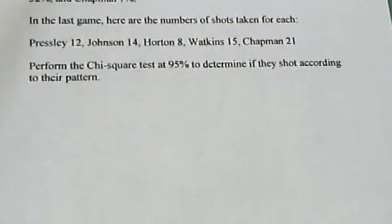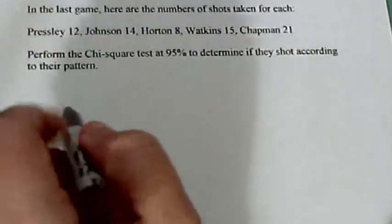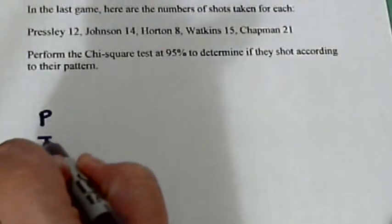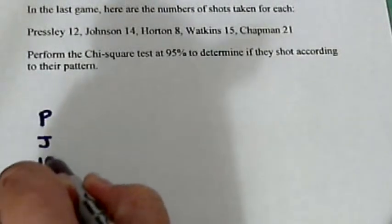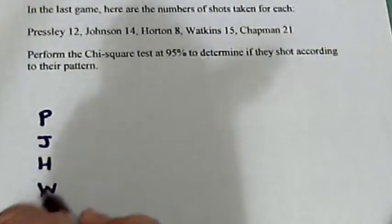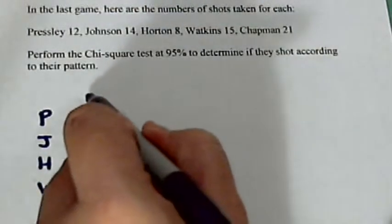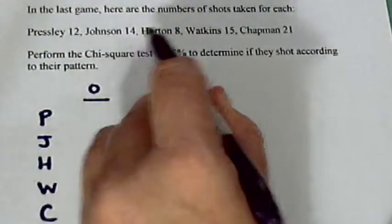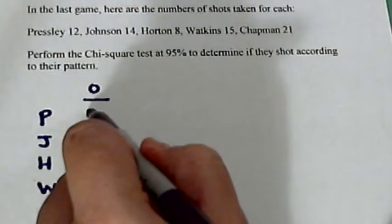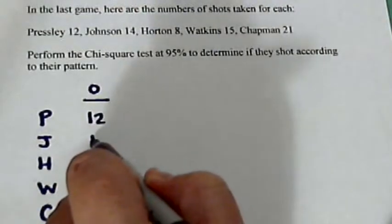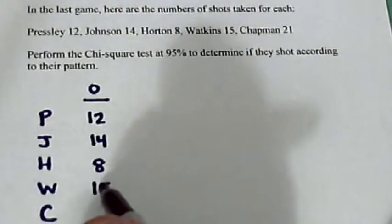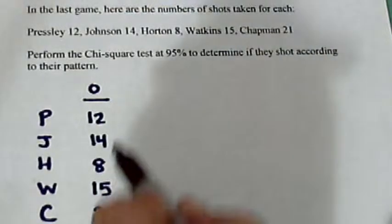Let's slide this down. We've got five players. I'll abbreviate Presley, Johnson, Horton, Watkins, and Chapman. In the first column, we're going to put the observed. And that's these numbers, how many shots we actually observed them taking. 12, 14, 8, 15, and 21.